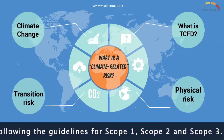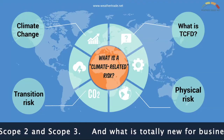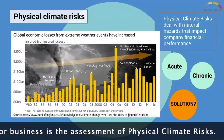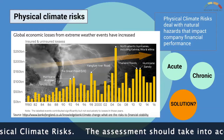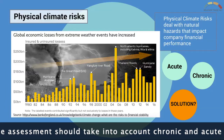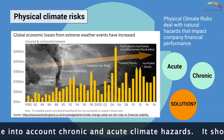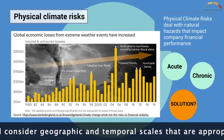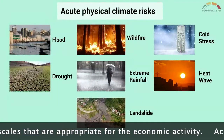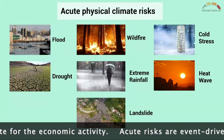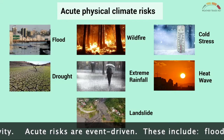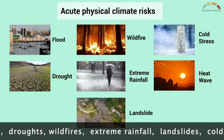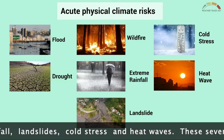What is totally new for businesses is the assessment of physical climate risks. The assessment should take into account chronic and acute climate hazards, and consider geographic and temporal scales appropriate for the economic activity. Acute risks are event-driven and include flooding, droughts, wildfires, extreme rainfall, landslides, cold stress, and heatwaves. These severe events have immediate and long-lasting consequences.